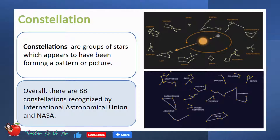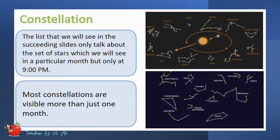Overall, there are 88 constellations recognized by the International Astronomical Union and NASA. The list in the following slides only talks about the set of stars visible in a particular month, but only at 9 p.m. It is possible to change every hour before and after the said time. Take note that most constellations are visible for more than just one month.